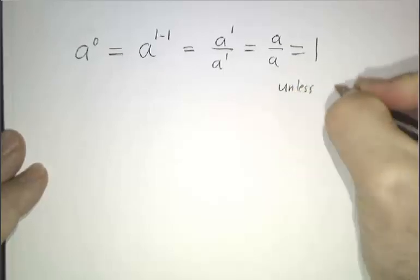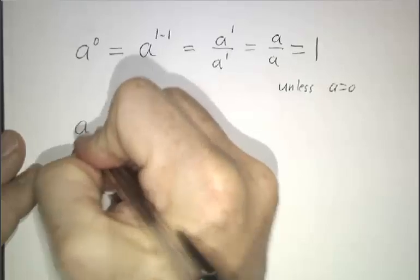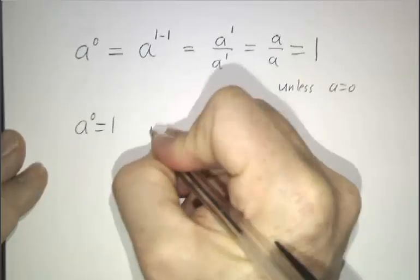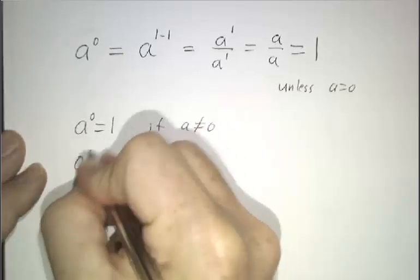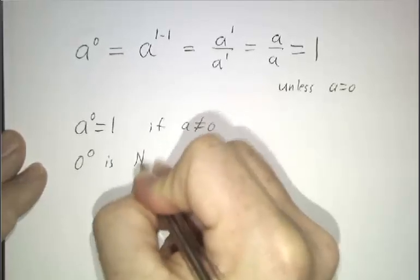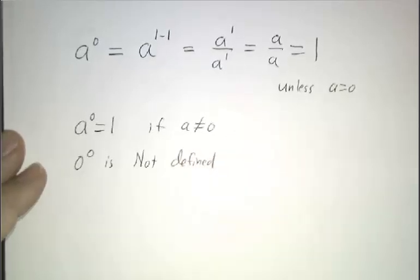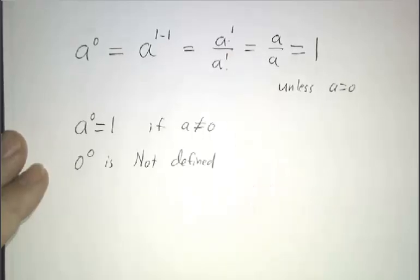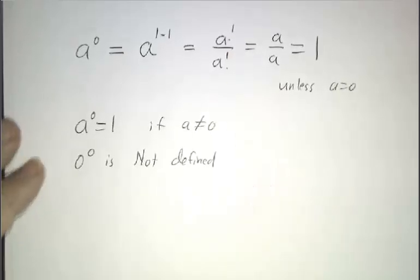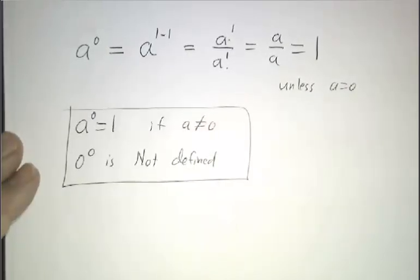Unless a is 0. So what we've gotten is the law that a to the 0 is equal to 1, if a is not 0. 0 to the 0 is not defined. You can't take the 0th power of 0, because that's just saying 0 divided by 0. That doesn't make sense.